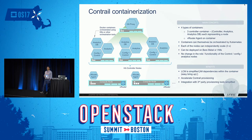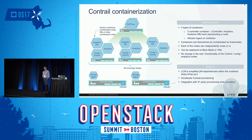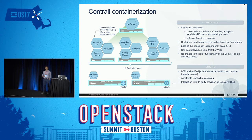We also have a vRouter agent container which runs on every compute node. If you have a Kubernetes cluster, the Kubernetes master will run the controller components, and all the Kubernetes slave or minion nodes will run our vRouter agent containers. In addition, we have a vRouter kernel module to handle our forwarding. Each of these containers can be deployed many ways — Ansible, Puppet, and so on — but the new thing for this release is Helm-based deployment, which I'll show in a demo towards the end.